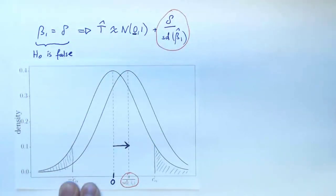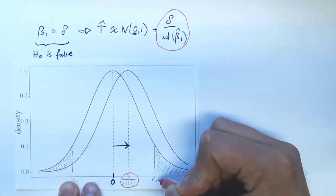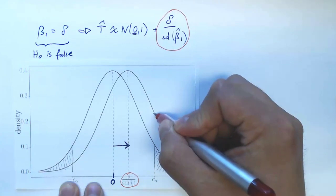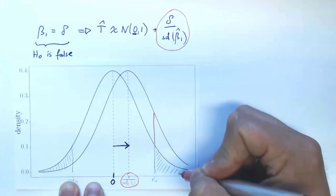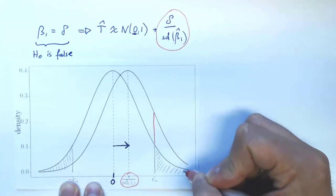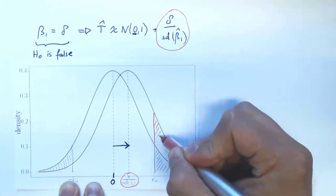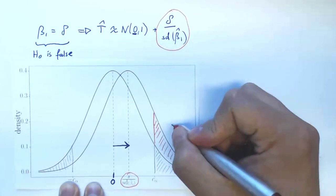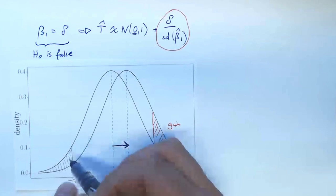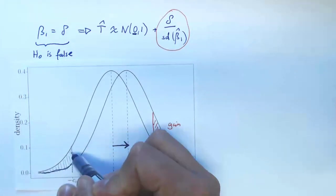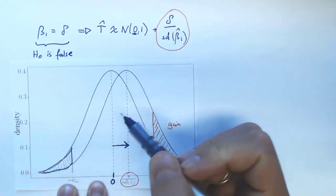Now, what is the probability that we reject if we're in this scenario? So we would reject, for example, if T hat realizes to be larger than C alpha. And the probability of this happening is given by basically the area here under the curve. So it's the alpha half from before. And now we gain this additional probability. On the other hand side, we're moving a little bit out of the rejection region on the left hand side. So we are losing this chunk of probability.